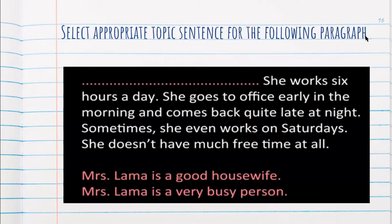Now, please write down the correct topic sentence for this paragraph: 'She works six hours a day. She goes to office early in the morning, comes back quite late at night. Sometimes she even works on Saturdays. She doesn't have much free time at all.' The correct answer is 'Mrs. Lama is a very busy person.' We would not select 'Mrs. Lama is a good housewife' because the supporting evidences and concluding sentence are not talking about being a good housewife — they are talking about her being busy. That was the central idea.